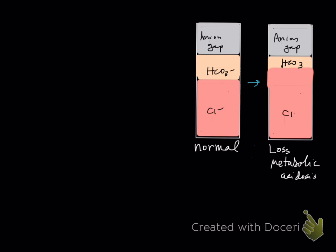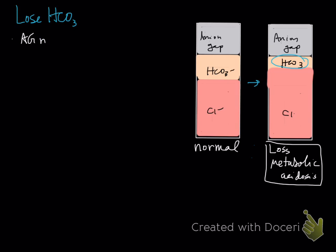When you go to the loss side, you're actually losing bicarbonate, and that causes chloride to increase to maintain electrical neutrality. When you have a loss metabolic acidosis, your anion gap may be unchanged — so anion gap can be normal — or if you have a concurrent titrational process, it can be increased. An anion gap that's normal would support loss metabolic acidosis more so.